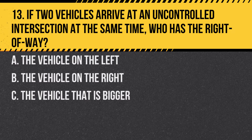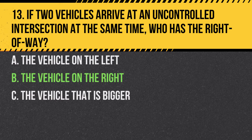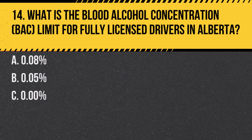Question 13. If two vehicles arrive at an uncontrolled intersection at the same time, who has the right-of-way? a. The vehicle on the left. b. The vehicle on the right. c. The vehicle that is bigger. Answer: b. The vehicle on the right. The right-of-way goes to the vehicle on the right in this situation.